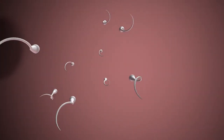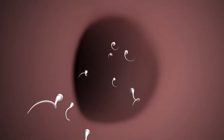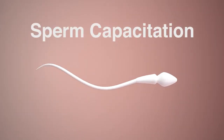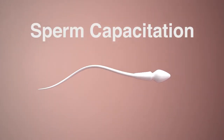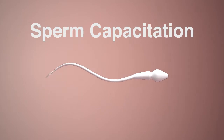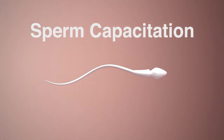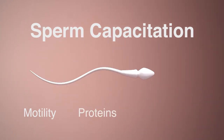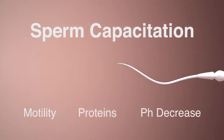Sperm are then able to swim through the uterotubular junctions to reach the uterine tubes, where they are stored until ovulation. Sperm in their original form are not able to fertilize sufficiently. Capacitation is a biochemical process that initiates changes in motility, or hyperactivation, by removing and reorganizing proteins and decreasing intercellular pH.